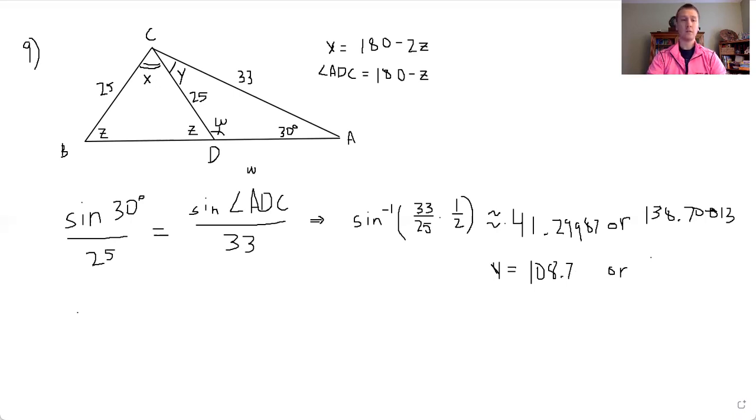The other one is 180 minus 30 minus 138.70013. And that gives us 11.3, it's like 29987. And there's more decimals even after that. So now the question is, which one is it? So we're going to continue along. We don't know much about these. We're going to continue along. And one of these has to be a contradiction.